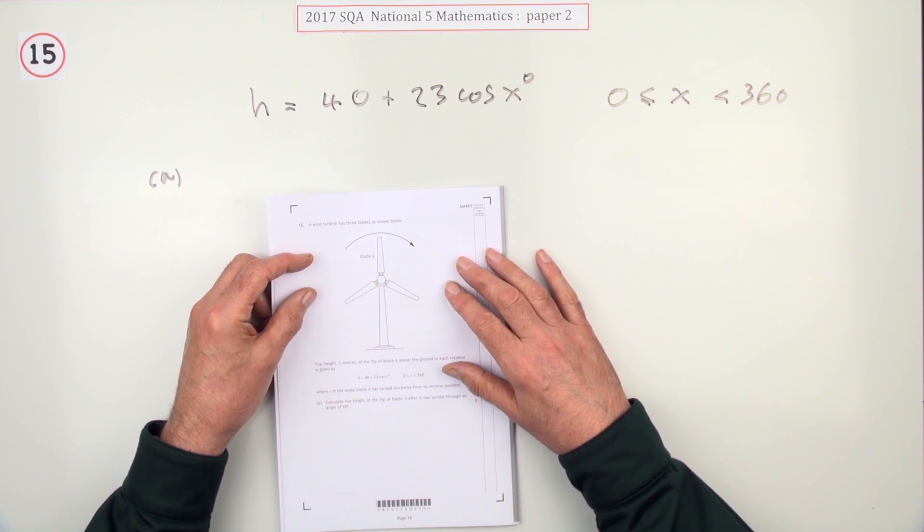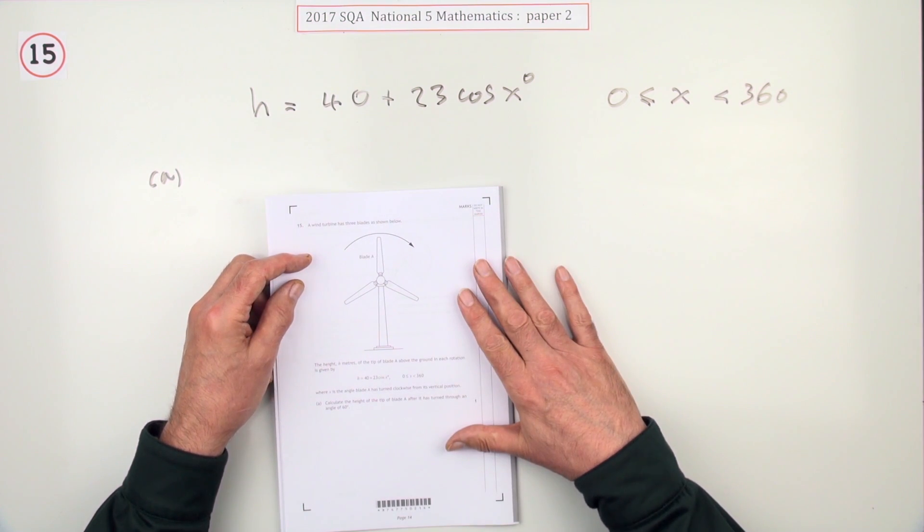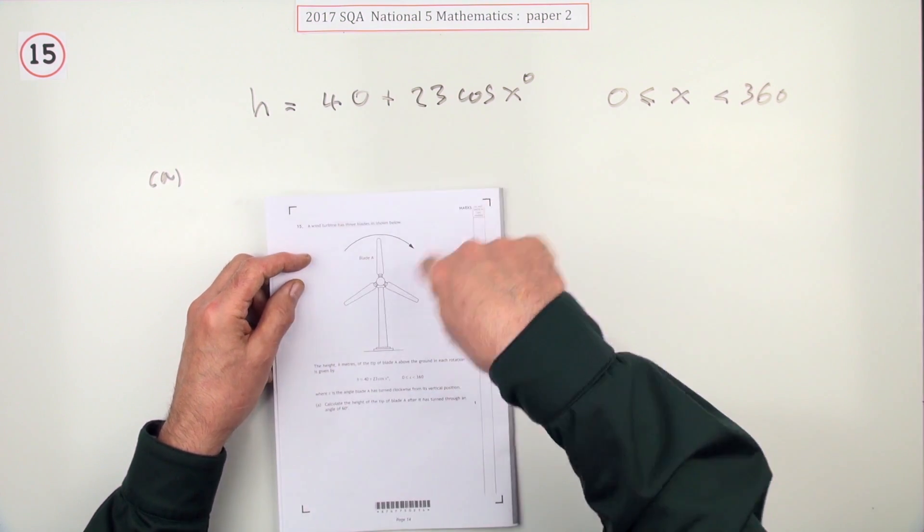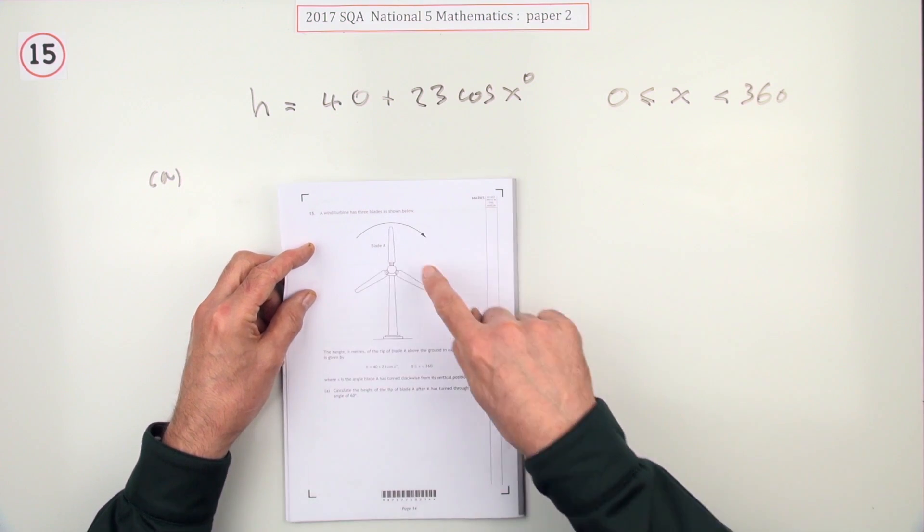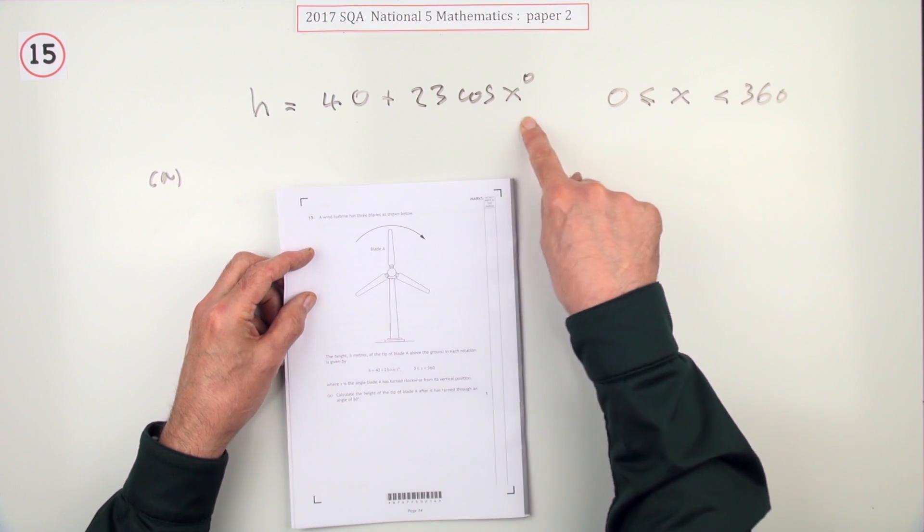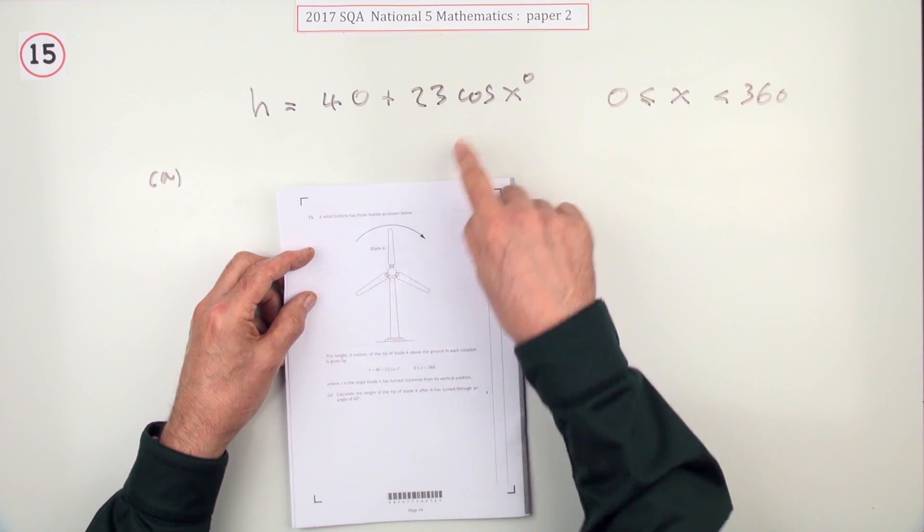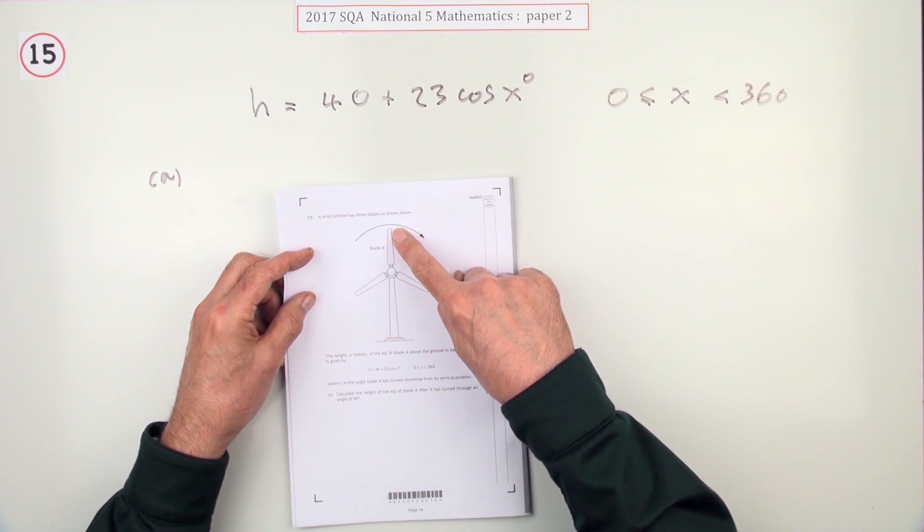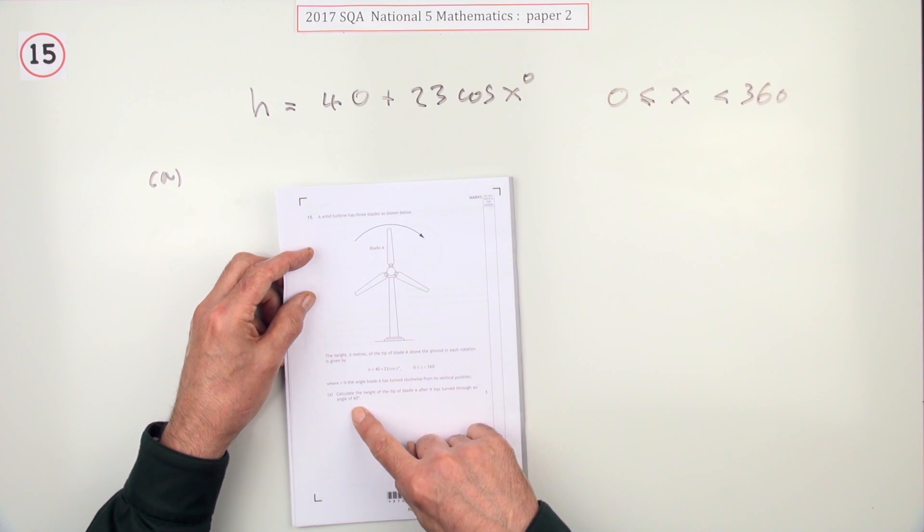Right, so you've got this turning windmill. The height of a blade is modeled by this. Calculate the height of the tip of the blade after it's turned through 60 degrees. After this has gone to 60, only one mark.